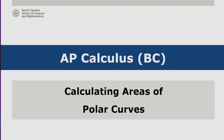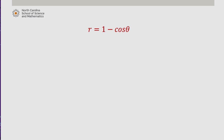In this video, we'll work through two examples of finding areas of polar curves. Consider the cardioid r equals 1 minus cosine of theta. Let's find the area of the region in the first quadrant within this cardioid.